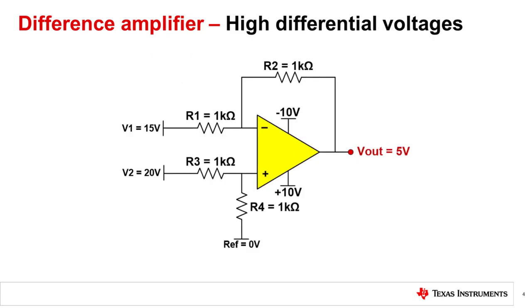An interesting feature of this difference amplifier is its ability to process input voltages, V1 and V2, which are greater than the power supplies. Take, for example, this unity gain difference amplifier with power supply voltages of plus/minus 10 volts. As you know, the input and output limitations of an amplifier are with respect to the power supply rails. In this example, we have V2 equal to 20 volts and V1 equal to 15 volts. These are both beyond the power supply rails, but the circuit works.